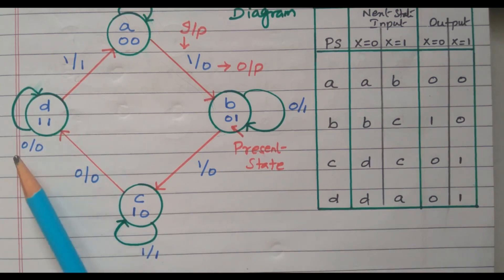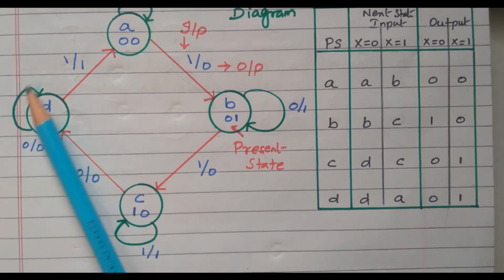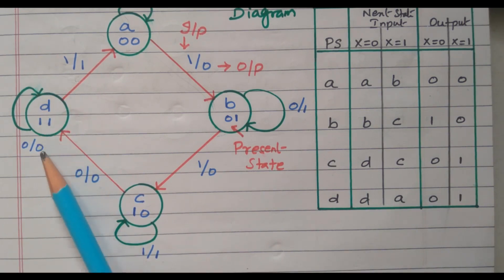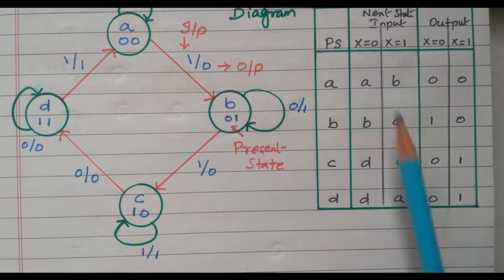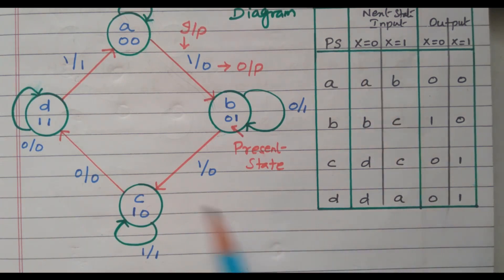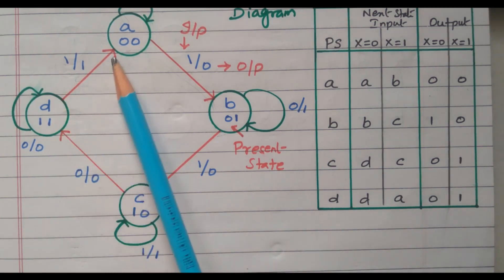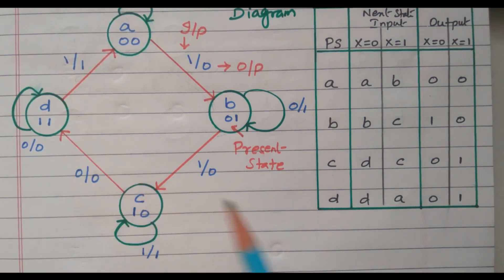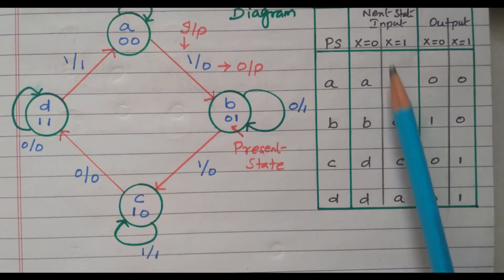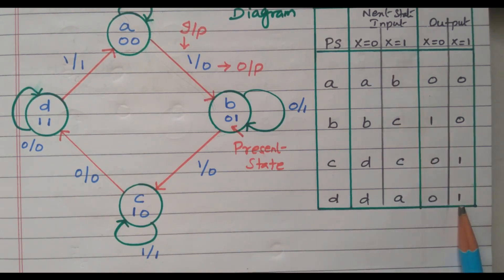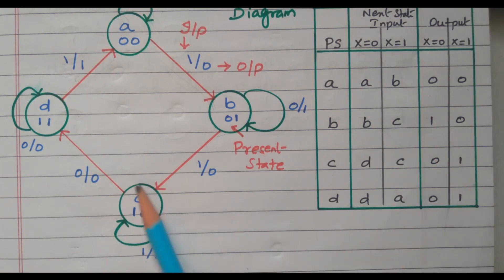For state D: when x equals 0, D goes to D itself and the output is 0. When x equals 1, D goes to A and the output is 1. So D to D when x equals 0 with output 0; D to A when x equals 1 with output 1. We have now explained all four states.